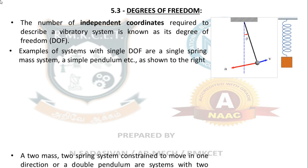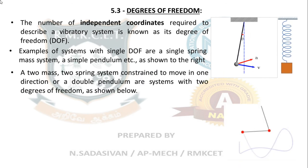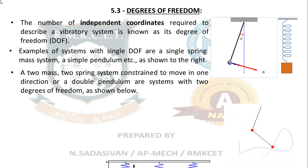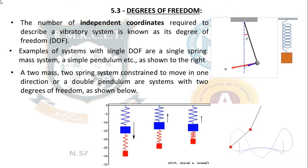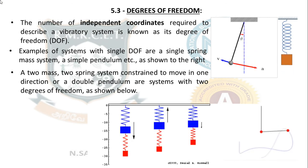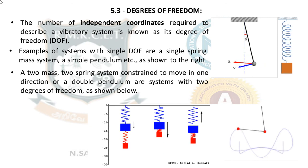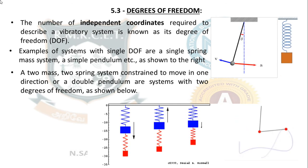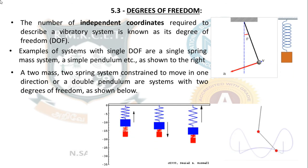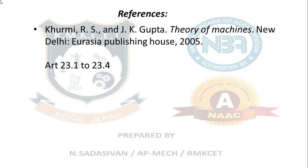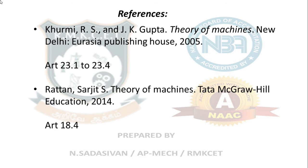There is also a two degree of freedom vibration, where you require two coordinates for completely defining the system — for example a compound or double pendulum, or a two spring-mass system, where you need to specify at least two displacements. The number of independent coordinates required to describe a vibrational system is known as the degree of freedom. Almost 99 percent of all problems in your syllabus are single degree of freedom problems. Reference: Kurmi and Ratan sections 23.1 to 23.4 and 18.4.